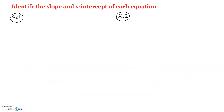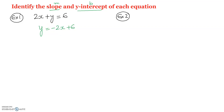The third question asks us to identify the slope and y-intercept of each equation. The first equation is 2x + y = 6. We rearrange it into the form y = mx + b by taking 2x to the right side, changing the sign: y = -2x + 6. Therefore, the slope m = -2 and the y-intercept b = 6.